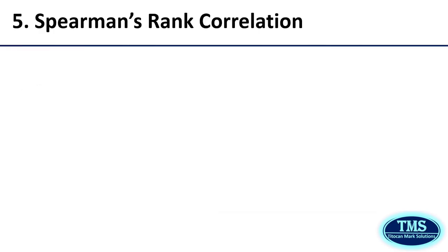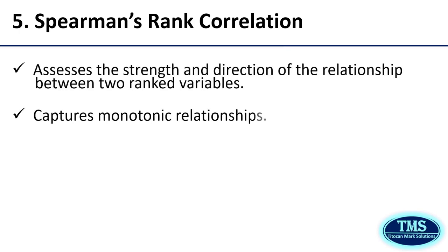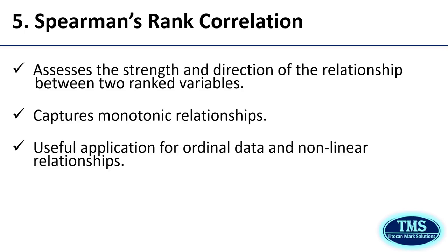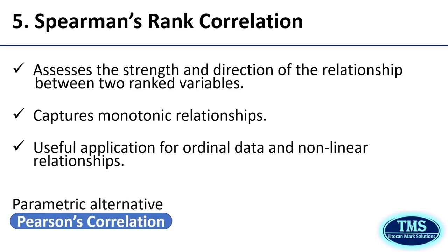Fifth, Spearman's Rank Correlation. Spearman's Rank Correlation is a non-parametric measure of rank correlation. It assesses the strength and direction of the association between two ranked variables, making it versatile for a wide range of applications in statistical analysis. Spearman's correlation can capture monotonic relationships — that is, relationships that are consistently increasing or decreasing, but not necessarily linear. It is particularly useful when dealing with ordinal data, non-linear relationships, or when the assumptions of Pearson's correlation are not met. The parametric alternative is Pearson's correlation. You are expected to consider performing a Spearman's Rank Correlation if and only if the parametric assumptions of Pearson's correlation are not satisfied or are violated by your data.